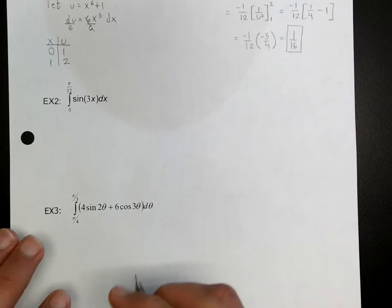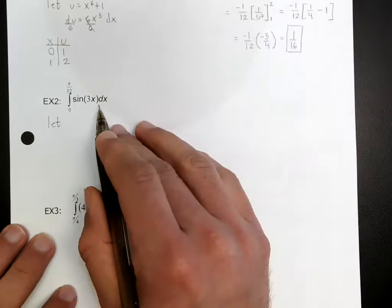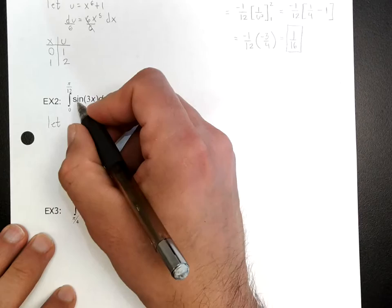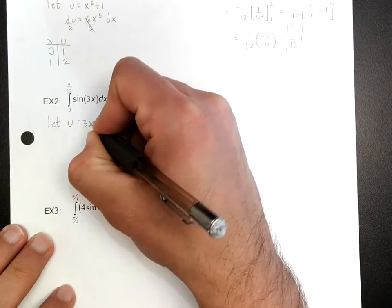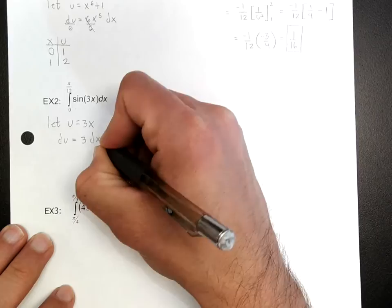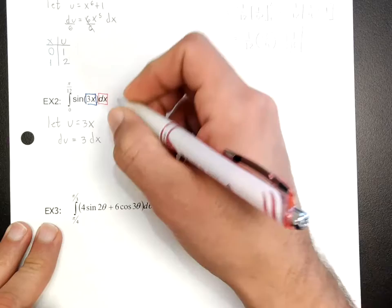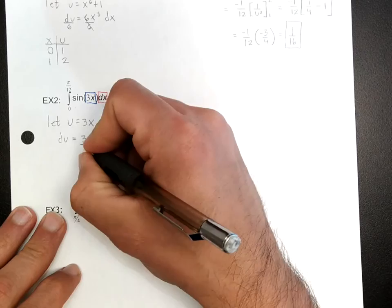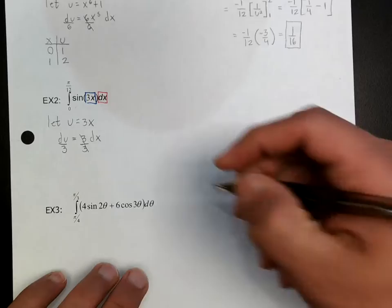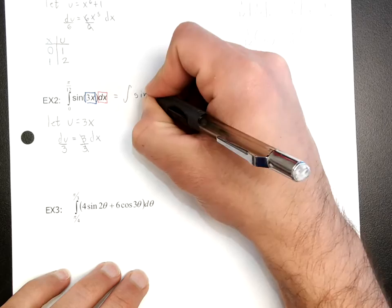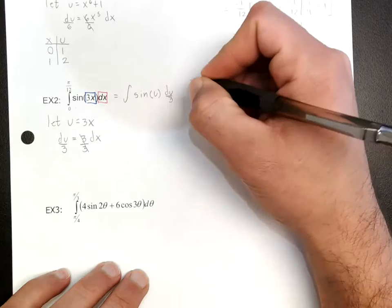Example 2. Same idea — you always want to look inside the function; that's going to be your u. The inner part of this sine function. So we let u equal 3x. Therefore du equals 3 dx. But notice I don't have a 3 anywhere in the integral, so I divide both sides by 3, giving dx equals du over 3. Rewriting, we have the integral of sine(u) du over 3.